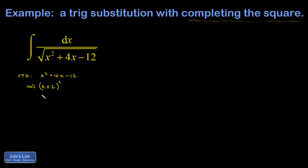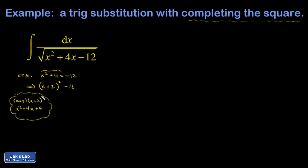x plus 2 gets it done. When I multiply x plus 2 by itself, it gives me x squared plus a 2x plus another 2x — those are the cross terms, so that's 4x. I've taken care of all the variable pieces with a single squared binomial. However, by writing the first two terms as (x+2) squared, I have added 4 to this expression, so I subtract 4 to make up for it. I end up with (x+2) squared minus 16, and that's an equivalent way of writing the interior of the square root.